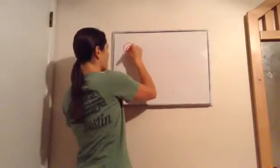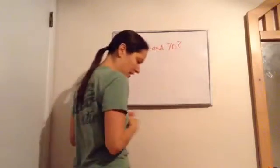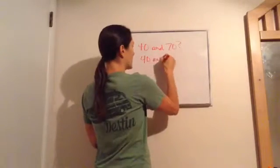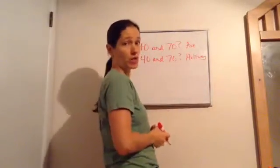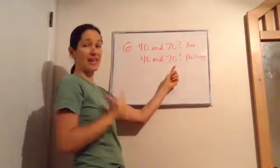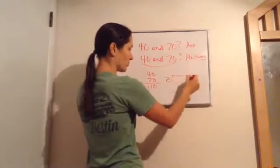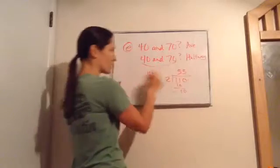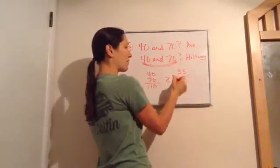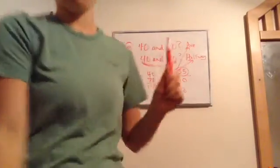There's a question on the practice set worth knowing for tests: 'What is the average of 40 and 70?' and 'What number is halfway between 40 and 70?' These are basically asking the exact same question. To find it, add them together: 40 plus 70 is 110, then divide by 2, which gives you 55. So the answer to both is 55 — just a quick little nugget for lesson 28.